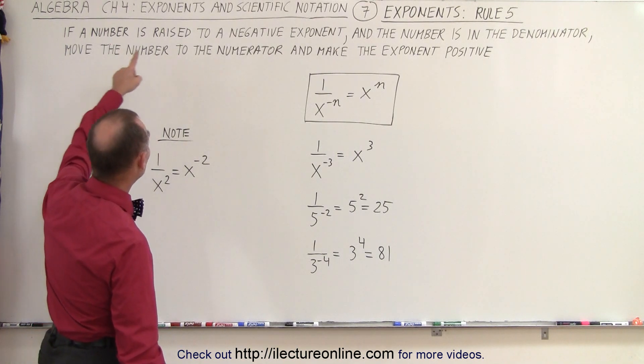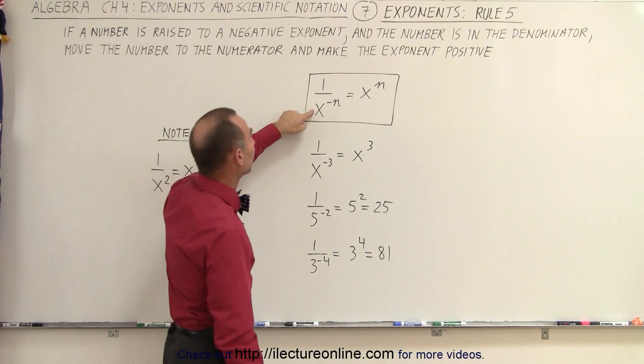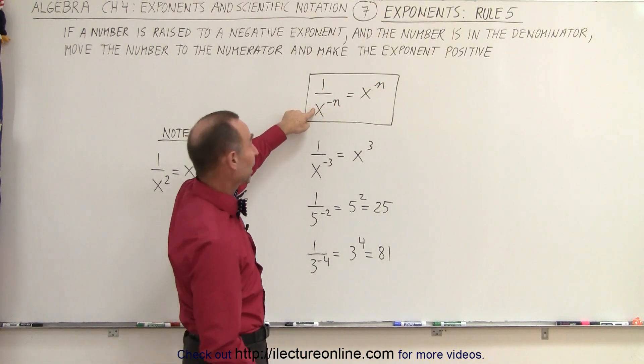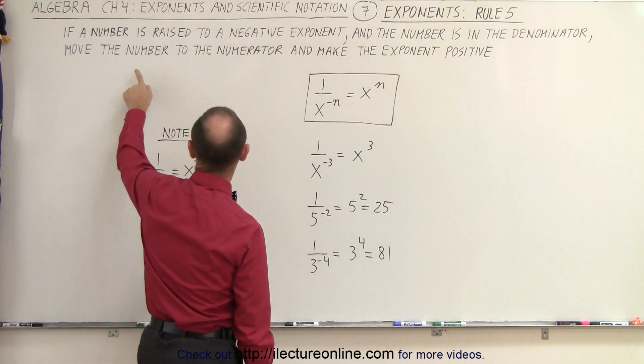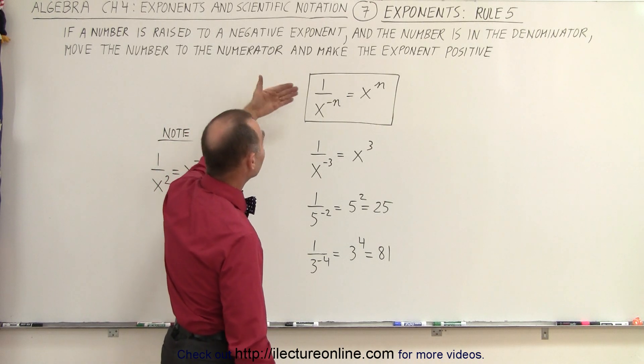In other words, if a number is raised to a negative exponent, and the number is in the denominator, like this one is right here, then move the number to the numerator and make the exponent positive.